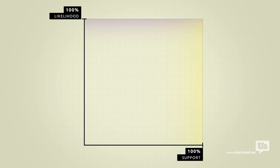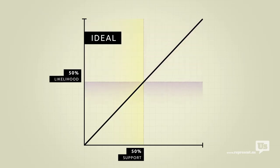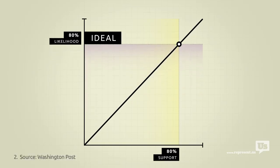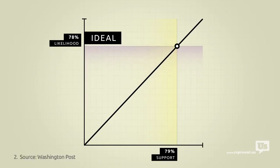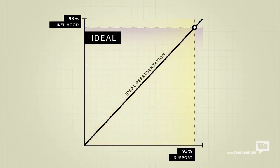On this graph, an ideal republic would look like this. If 50% of the public supports an idea, there's a 50% chance of it becoming law. If 80% of us support something, there's an 80% chance. You get the idea. Most Americans would probably agree that, with a few exceptions, we should be as close to this ideal as possible.